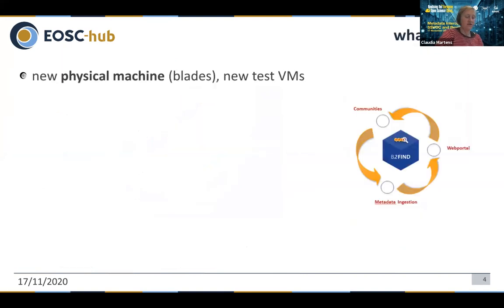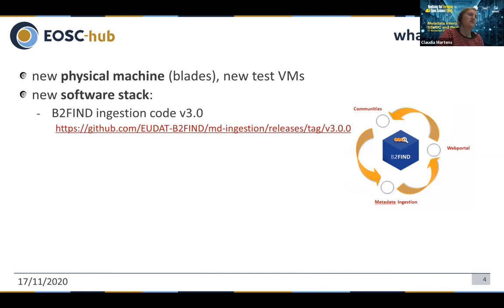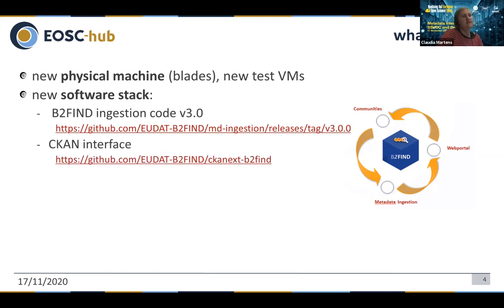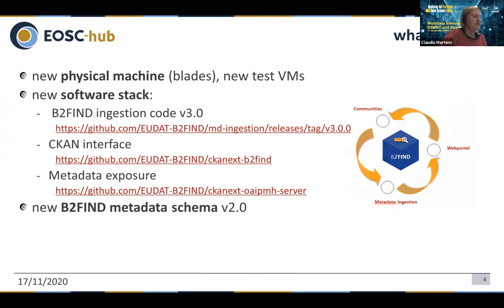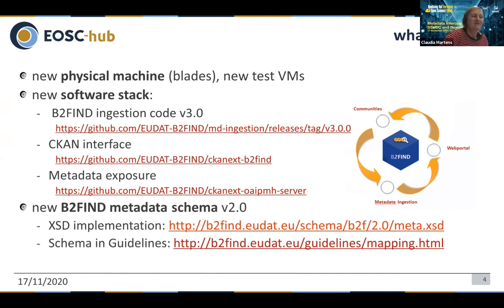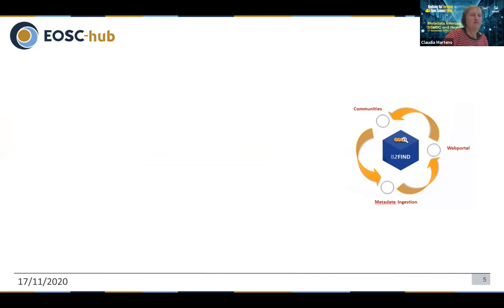What's new? Quite a lot — actually everything. We have really new machines and a new software stack composed of three components: the ingestion code, the CKAN interface, and the metadata exposure. All of this is really new now. Everything is in GitHub — all code is open and even reusable if someone wants to do that. We have a new B2Find data schema already implemented, described and published in our guidelines — links are in the slides for those who are interested.